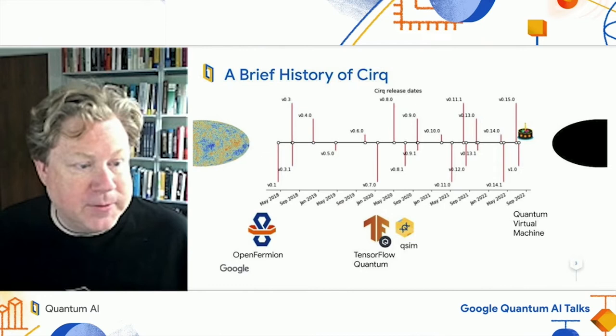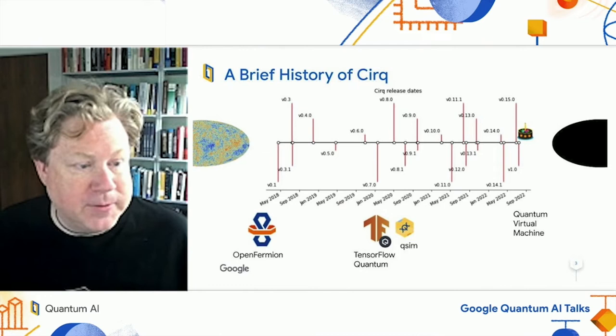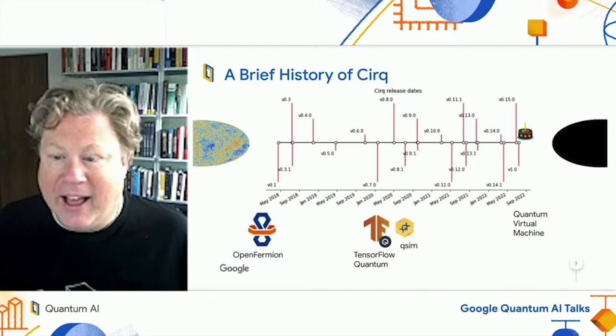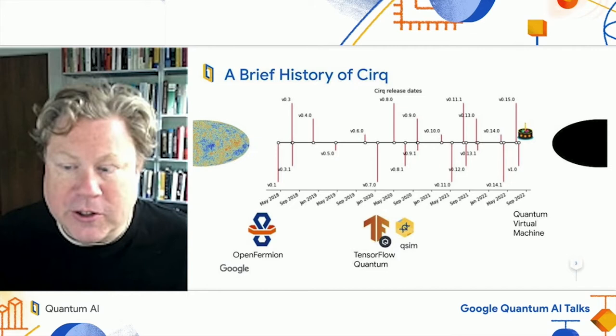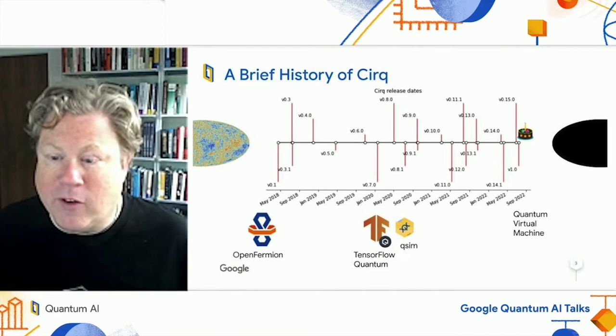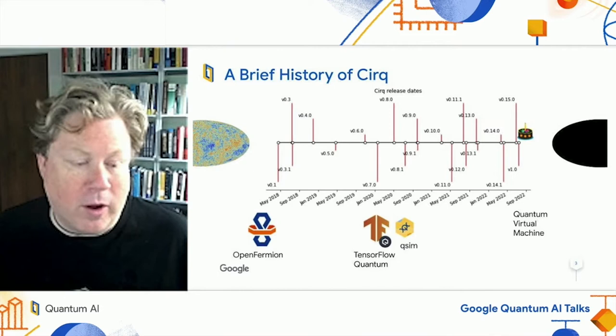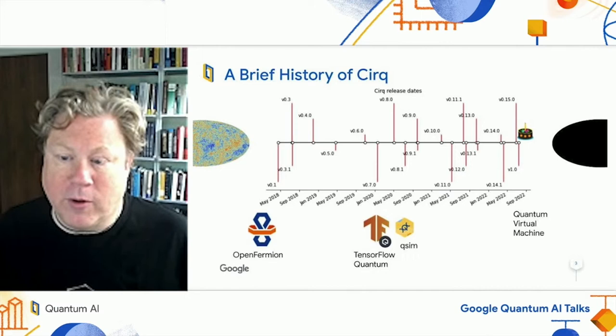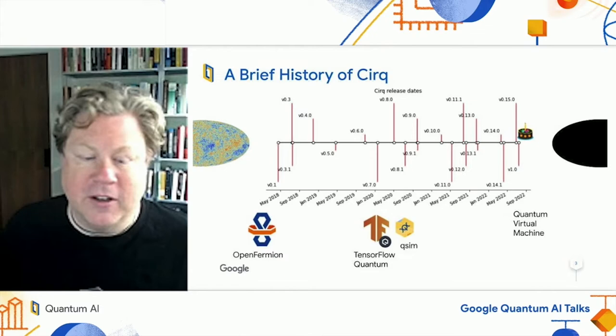We introduced Cirq back in 2018, and since that time we've been making point releases where we've added all sorts of new features and abilities to Cirq. Along the way, we've also developed a series of different packages on top of Cirq. At our release, we had OpenFermion for doing quantum chemistry simulations. Then we added TensorFlow Quantum, a framework for doing hybrid classical-quantum machine learning, backed by QSim, which is a high performance wave function simulator. QSim can also be used directly with Cirq. Today we're also hearing about the Quantum Virtual Engine.